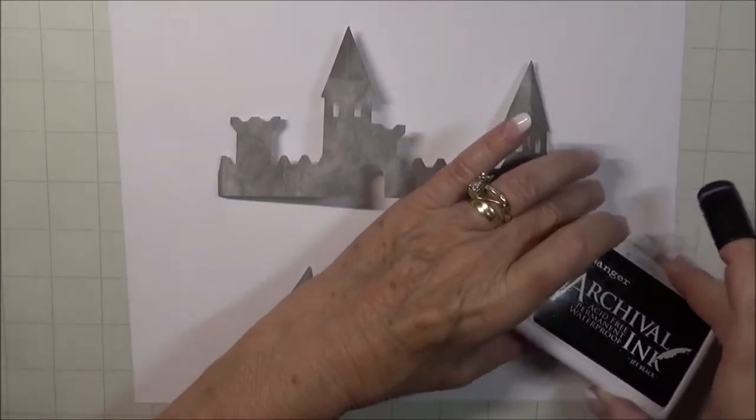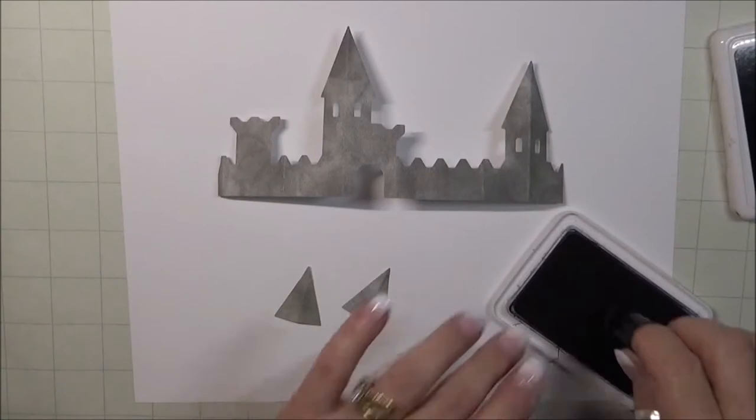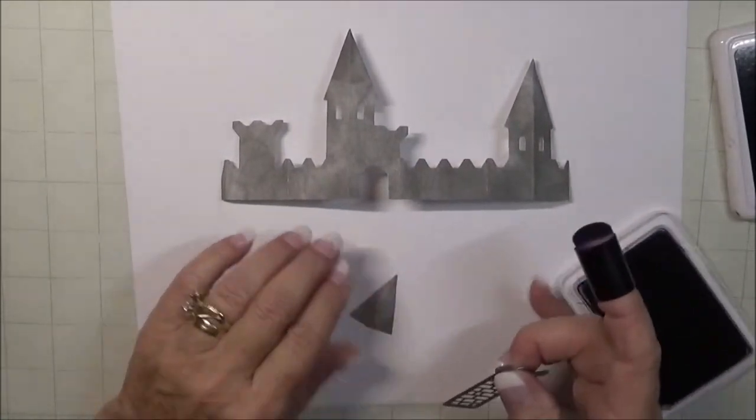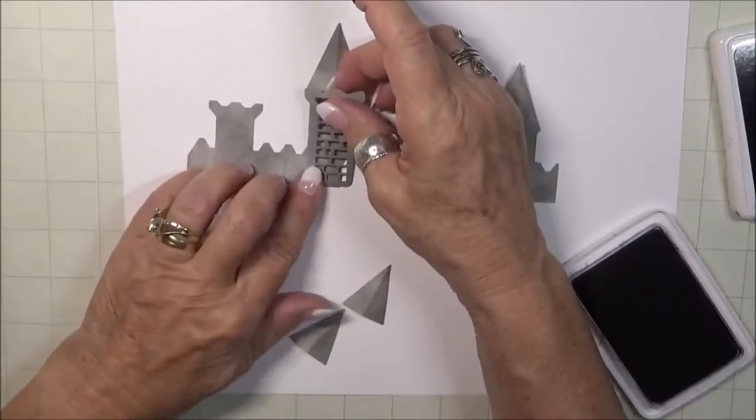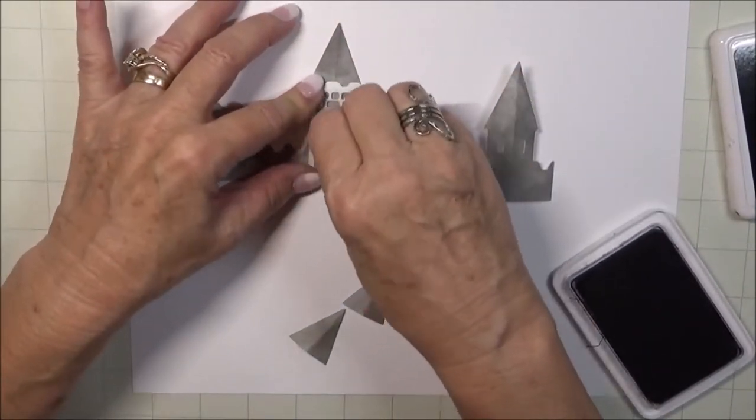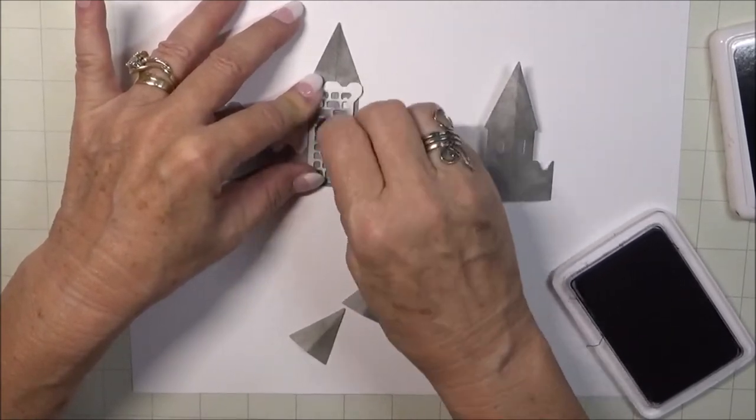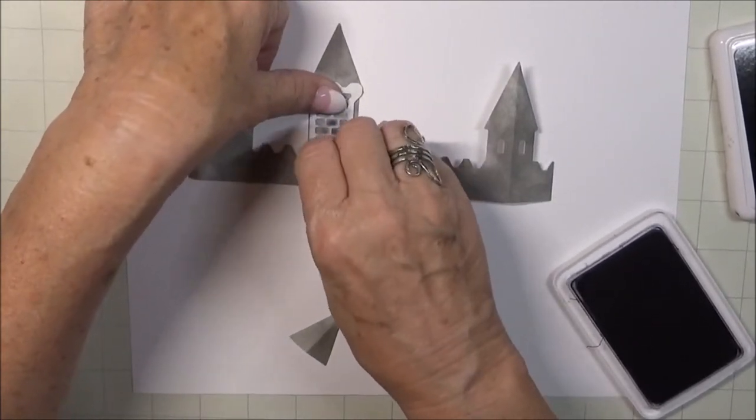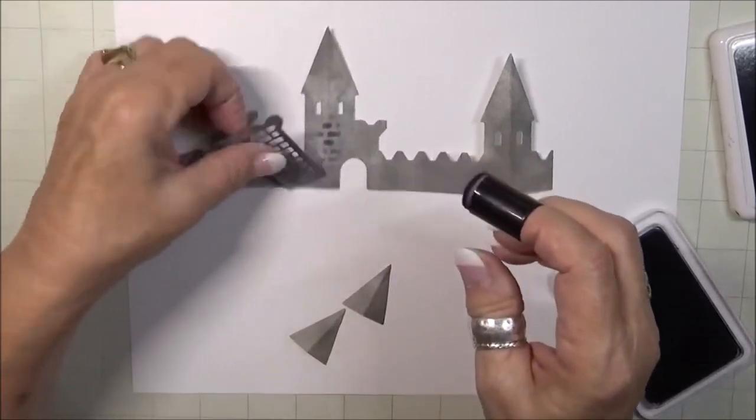Now it's time to add some small but important details to our castle. I'm using one of the accessory pieces from the die set as a stencil and not worrying at all about perfection because after all, it is a haunted castle. I'm applying the color with a finger dauber and black archival ink. However, any black ink will work here.